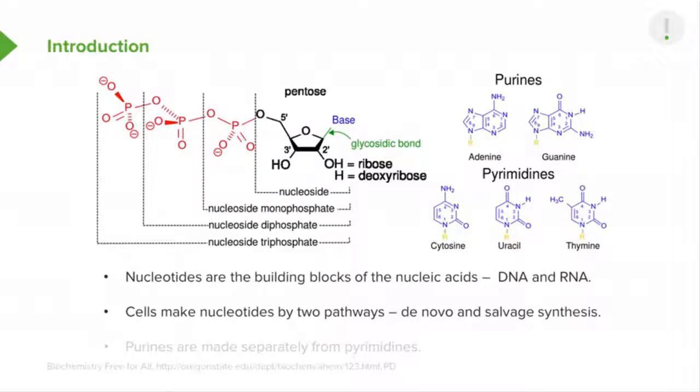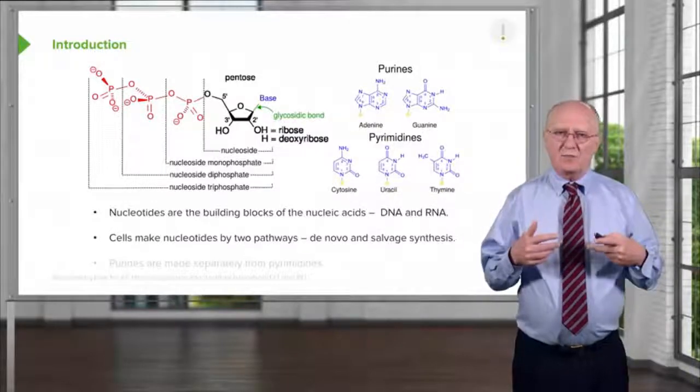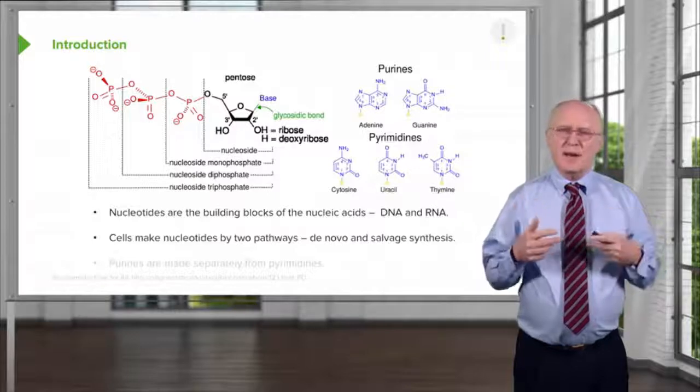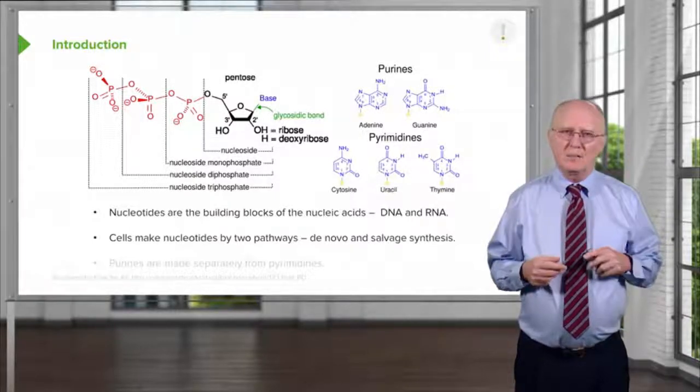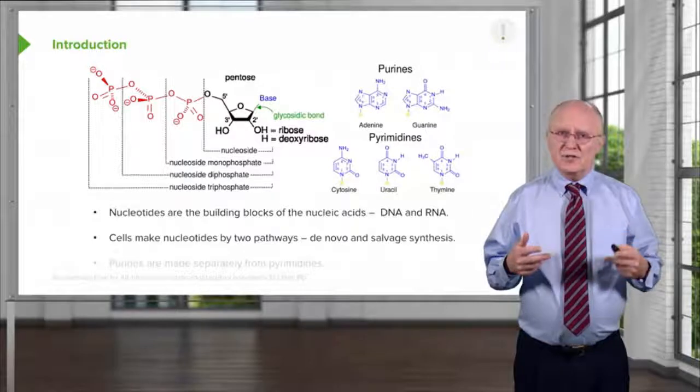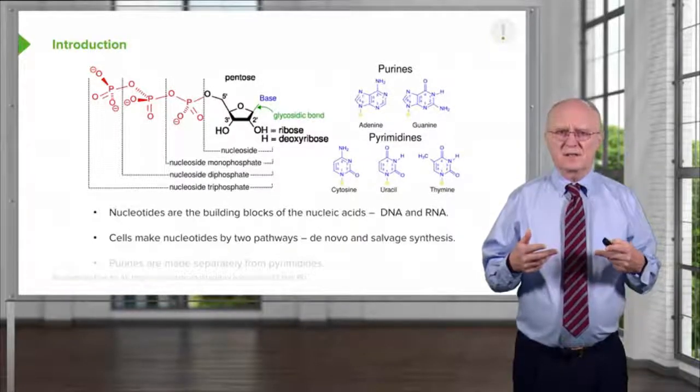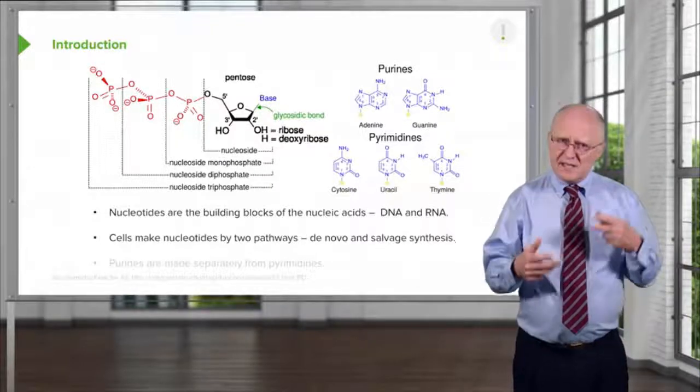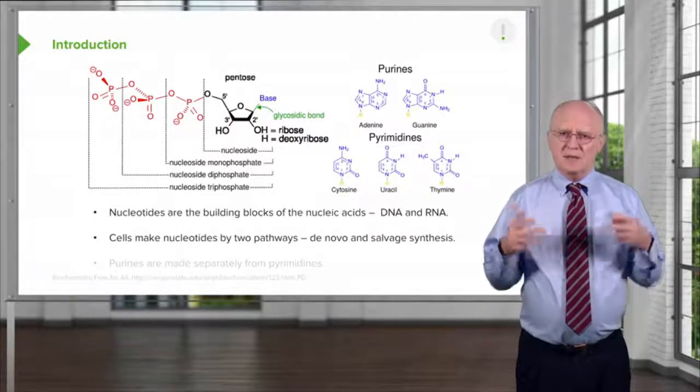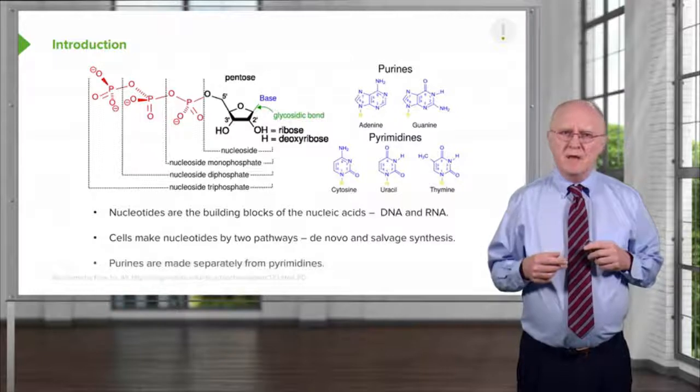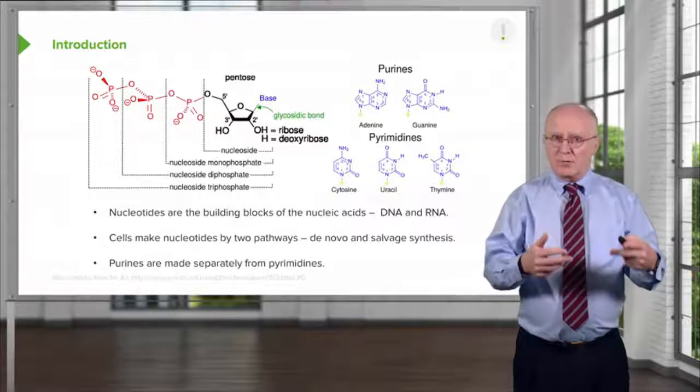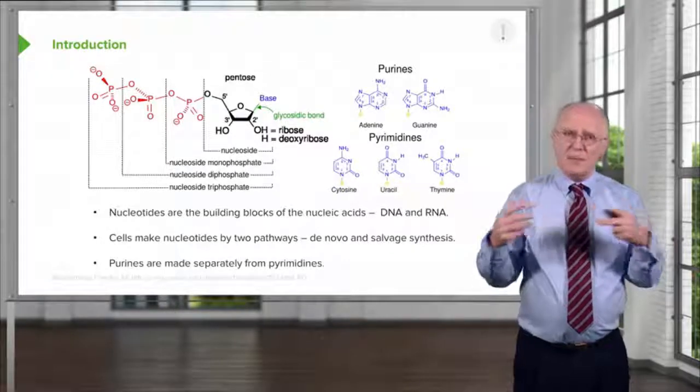Cells make their nucleotides by two distinct pathways. One pathway is called the de novo pathway, meaning that those nucleotides are made completely from scratch, from very simple compounds. The other pathway strategy is to use salvage synthesis, and as the name would suggest, that means that those nucleotides are made by using pieces of other nucleotides that have been broken down. Purines are made in a distinct pathway as well, distinguished from the pathway that's used to make pyrimidines, so we'll talk about them separately.